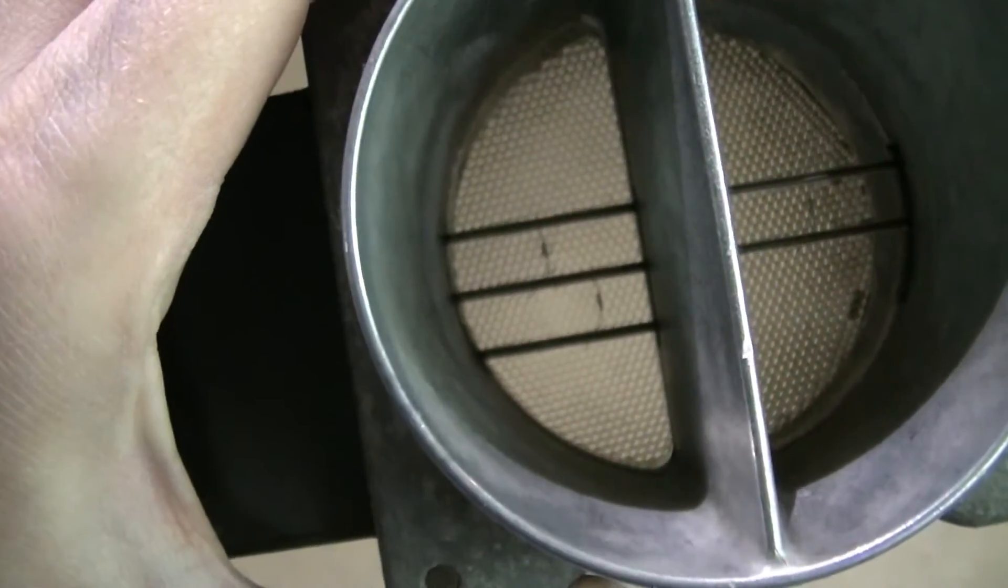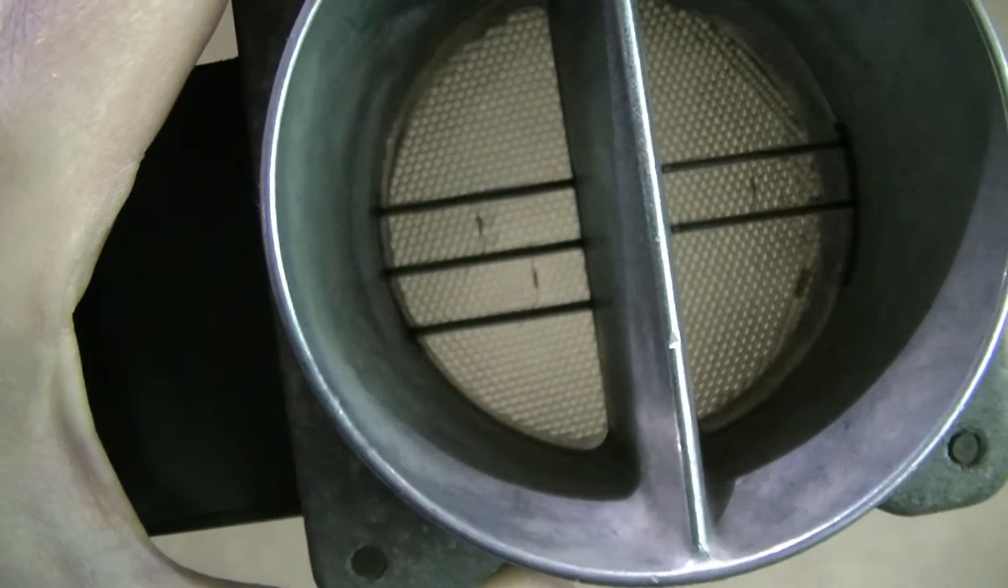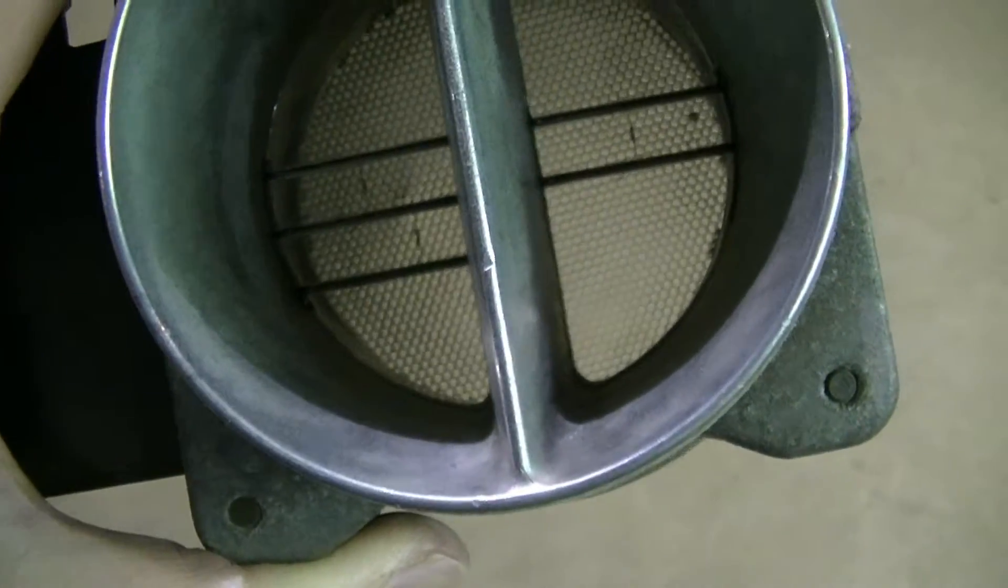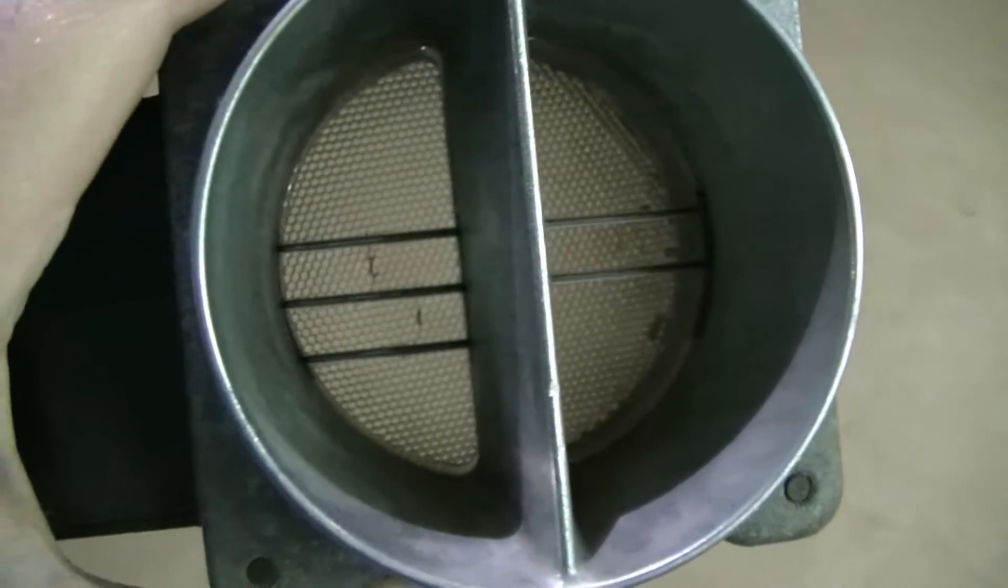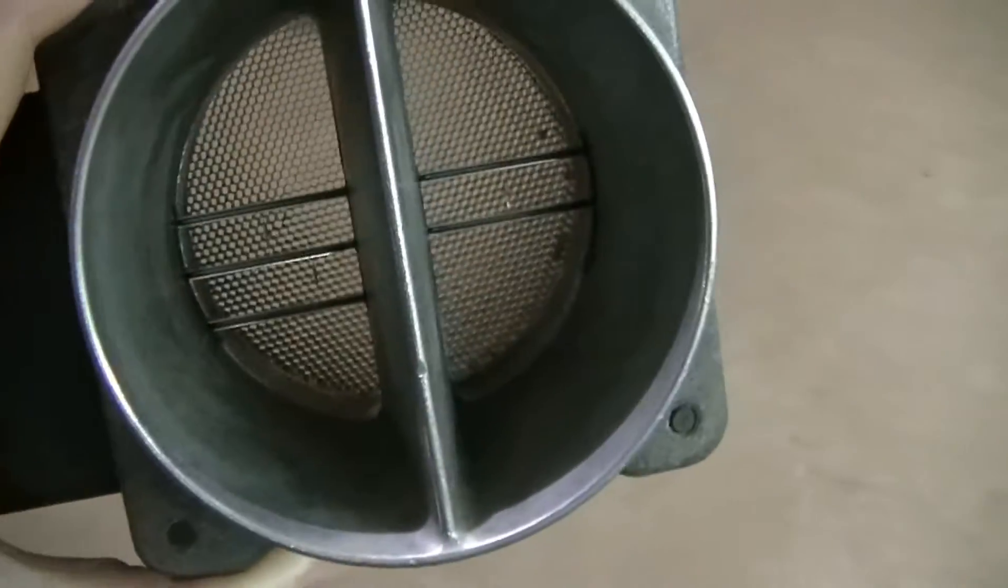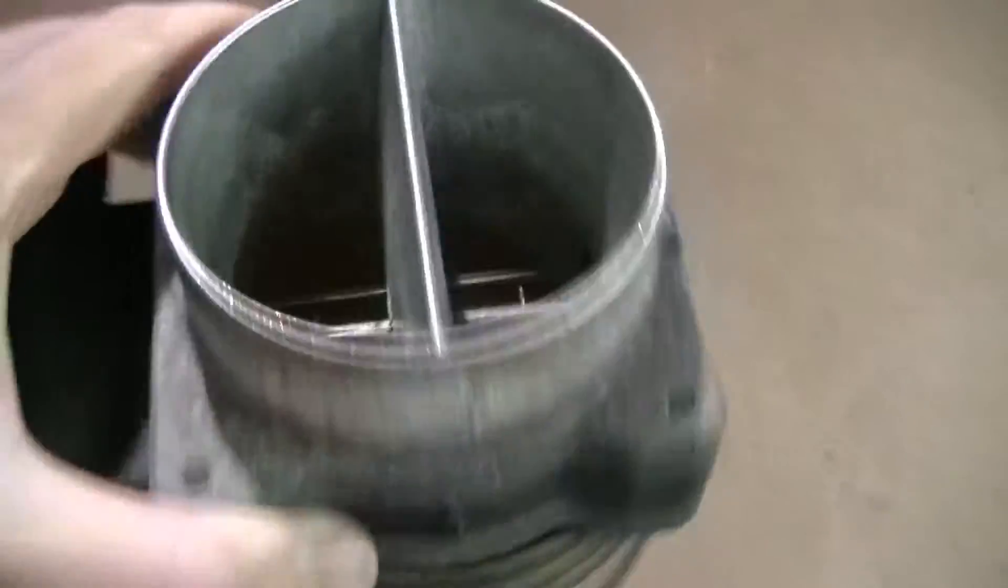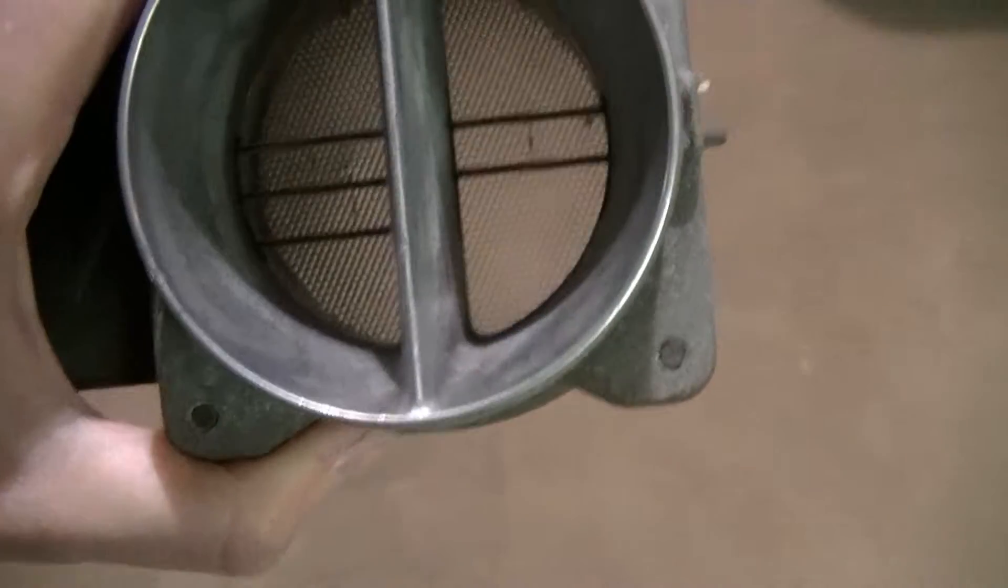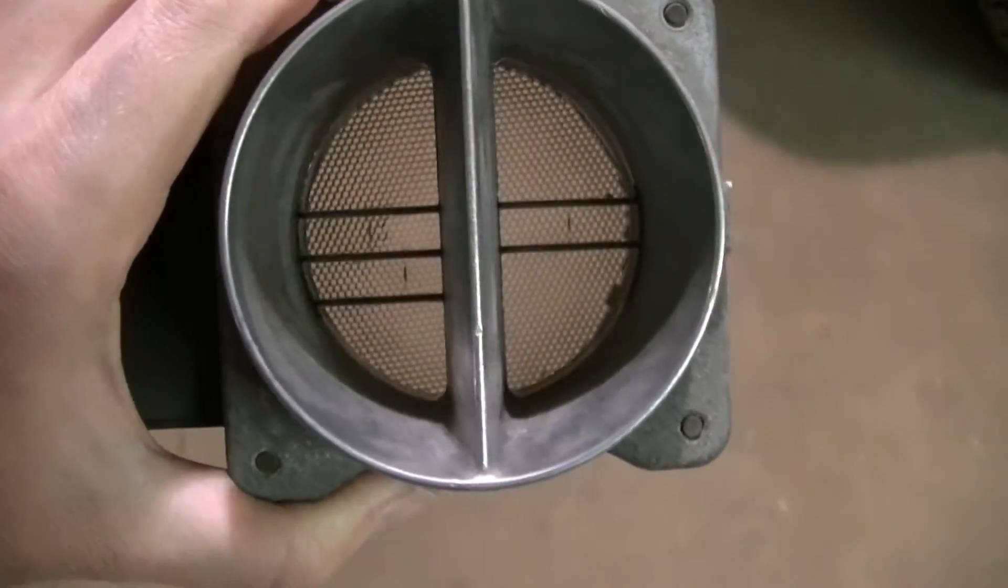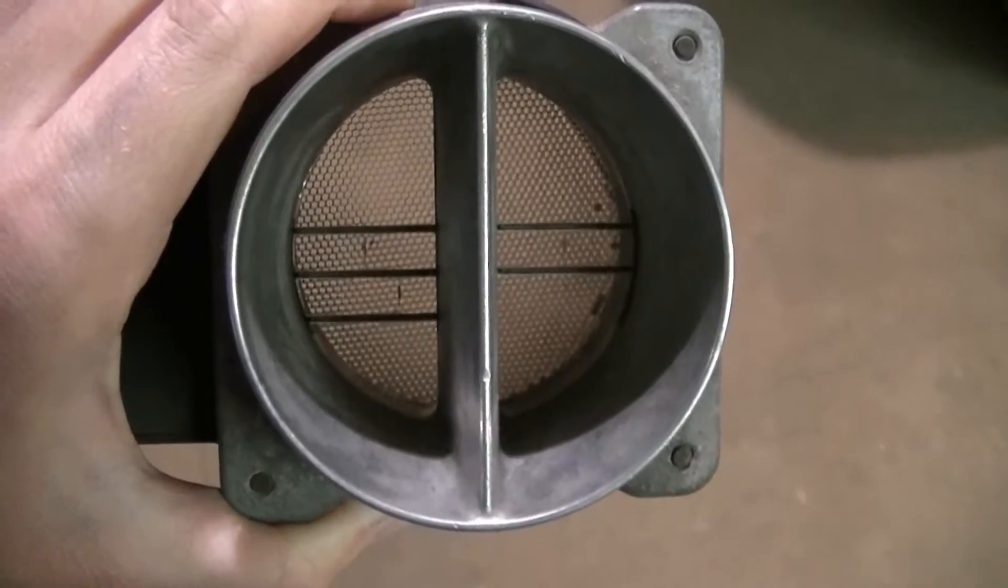And what I did is just took some brake cleaner, sprayed them down, and didn't touch them with anything. Just sprayed them down with the brake cleaner, let it dry. Now if you don't feel comfortable using brake cleaner, they do have a specific cleaner for the MAF sensor, so you can go that way if you want.